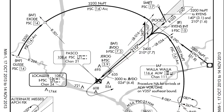Now that we know what an arc is, let's look at how to fly one. An arc is just a ring around a specified nav aid — in this case the Pasco VOR — at a specified distance. On this arc, it's 14 DME.